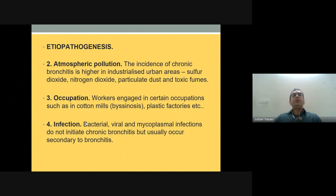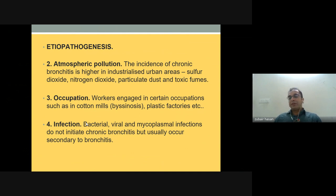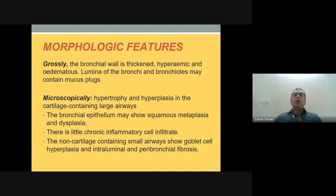Other etiopathogenic factors include atmospheric pollution — high levels of toxic fumes in the atmosphere — occupational hazards such as working in cotton mills and plastic factories, and infections from bacterial, viral, or mycoplasma organisms. Infections do not initiate chronic bronchitis but usually occur secondary to it.